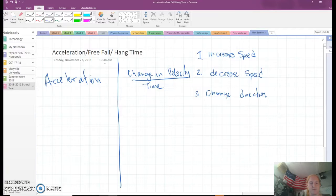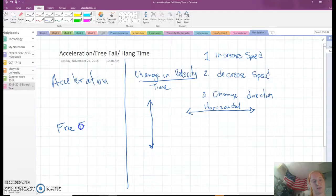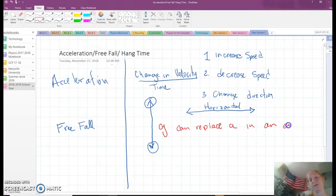Acceleration could be horizontal in either direction, or it could be vertical. When it is vertical, we call it free fall. And please notice I put arrows on the top and bottom intentionally. Free fall is any time we're dealing with gravity. So gravity can replace acceleration in an equation when an object is moving vertically.